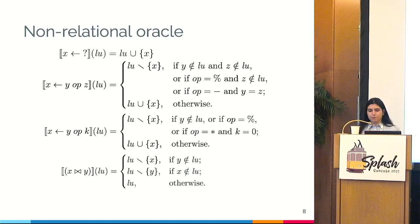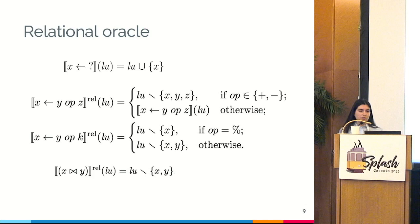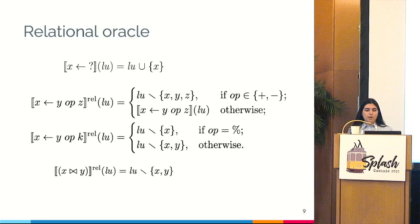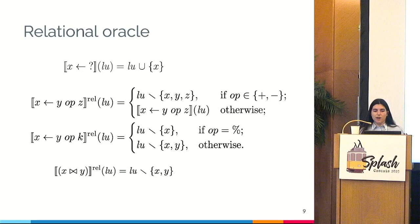The relational oracle has a similar implementation but is designed to be used with relational domains such as polyhedra, so we aim to be more conservative. For the non-deterministic assignment we simply add the likely unconstrained variable to the set. For assignments, we remove all variables when using specific operations such as plus or minus; otherwise we adopt the non-relational variant. For boolean guards, we remove all variables from the likely unconstrained set.